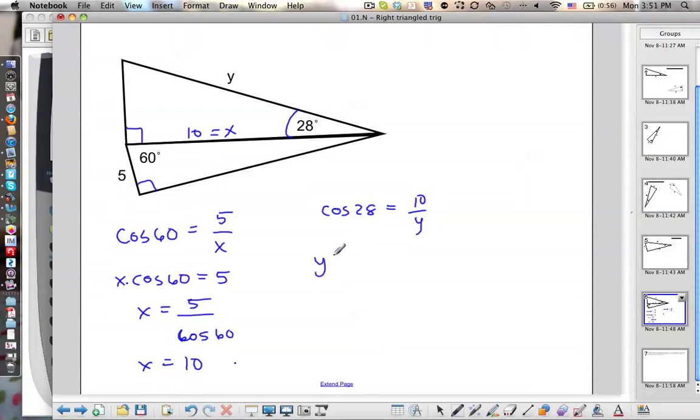Multiply by y on both sides, so y cosine 28 equals 10, and then divide by cosine 28. So y equals 10 over cosine 28.